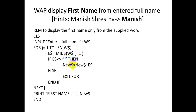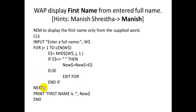If e$ is not equal to space, add the character: new$ equals new$ plus e$, and continue the loop. If e$ is equal to space, then EXIT FOR, which will terminate the FOR-NEXT loop. After the loop, PRINT 'First name is'; new$.